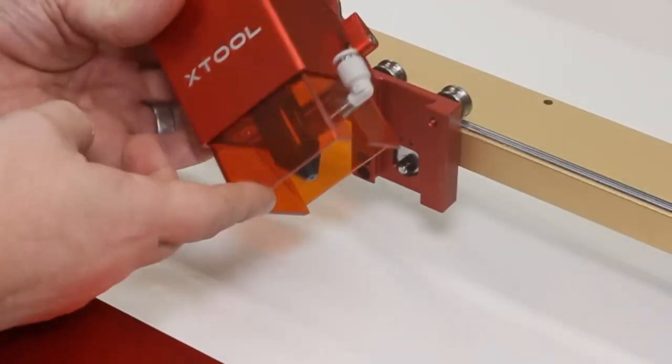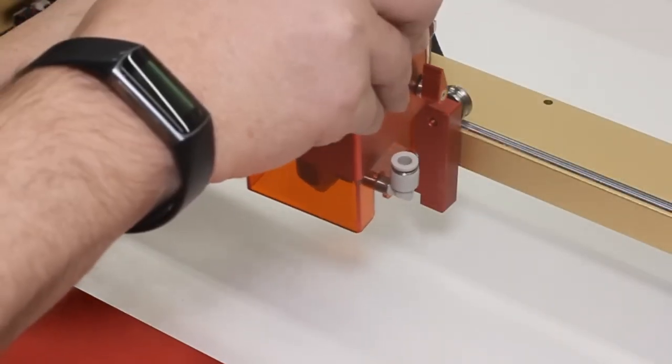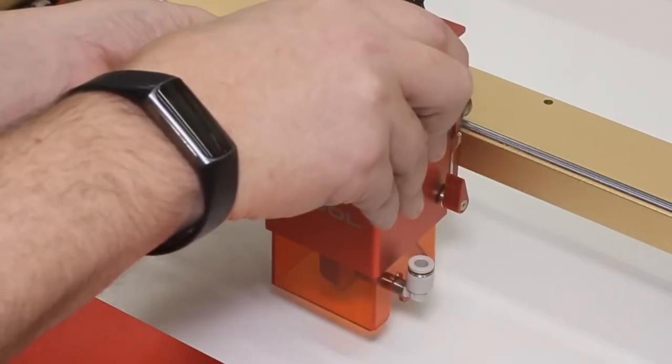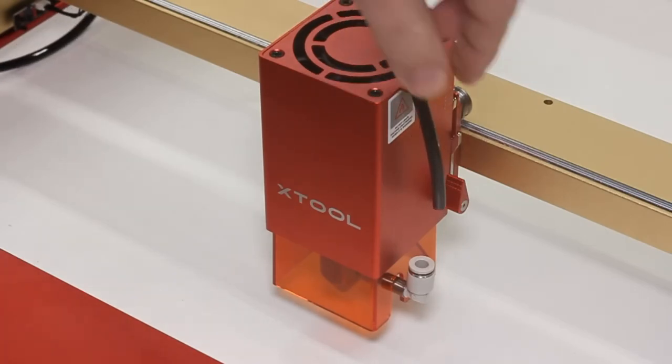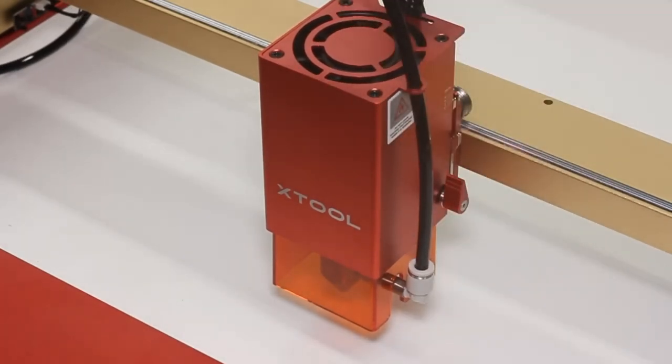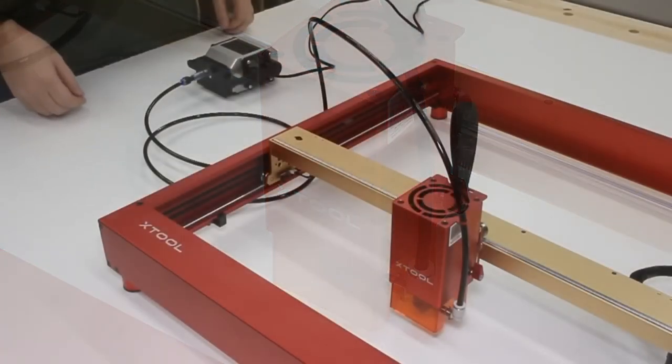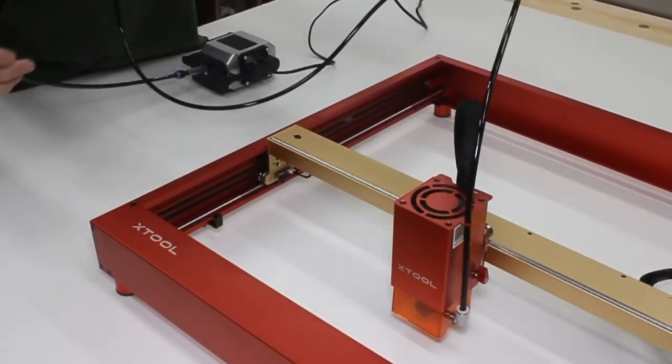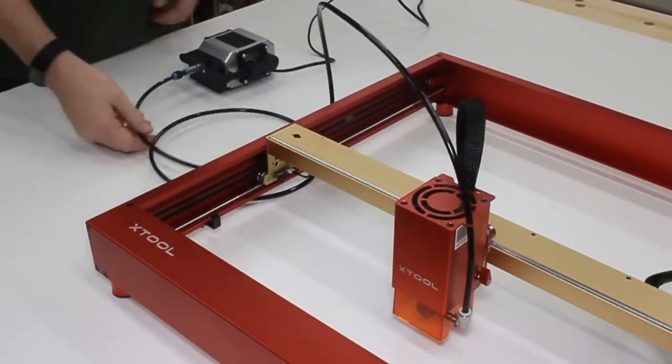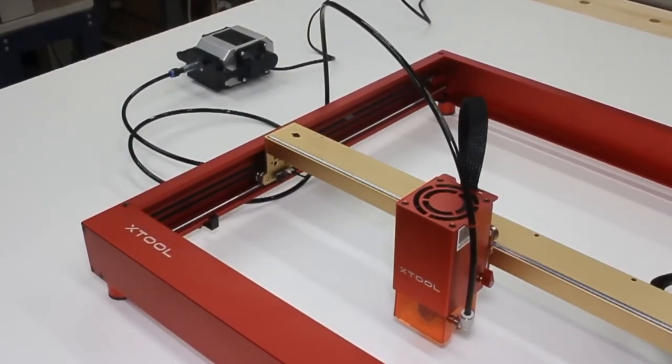The laser module has a custom nozzle with a fitting that comes out the side of the shroud. Once you have it secured in place, you can fish the hose down through a bracket at the top and into the fitting to supply air to the system. The worst thing about it, though, is the hose they give you. It's rigid plastic, so you can't run it in any of your cable management, and it just sort of sticks out and looks weird.